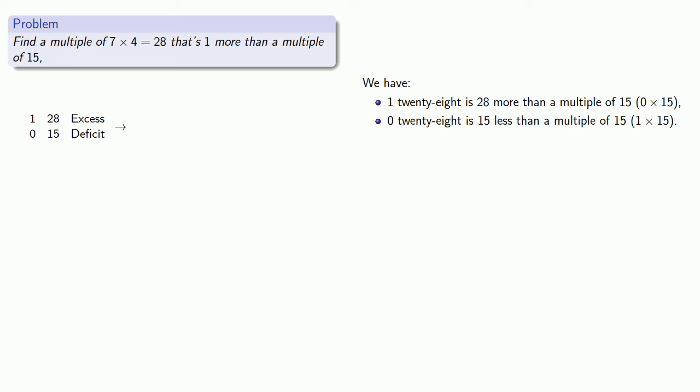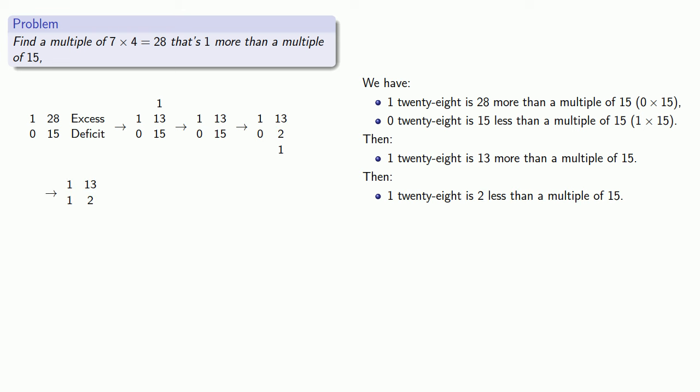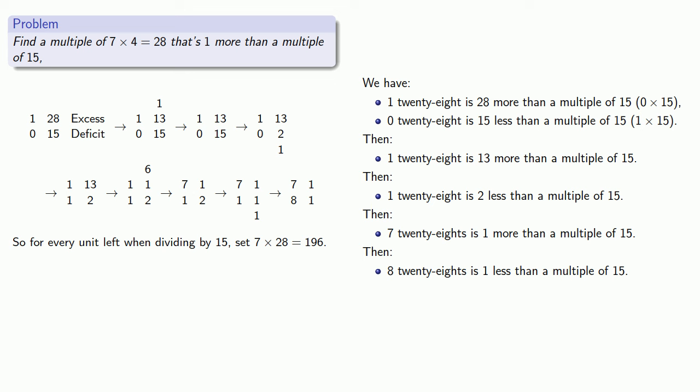Our first run through Change of Shows Procedure tells us 1×28 is 13 more than a multiple of 15. If we apply Change of Shows Procedure again, 1×28 is 2 less than a multiple of 15, and even though we don't need this, 8×28 is 1 less. That gives us our second set number: for every unit left when dividing by 15, set 7 times 28, 196.